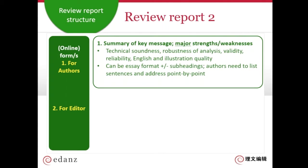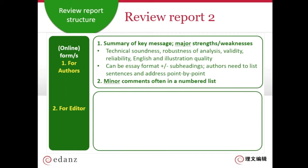Numbering is easier for the author to reply to, but if you do write an essay you could use subheadings for the strengths and weaknesses so the author understands more quickly — though the author will then have to take each sentence apart and address each point. The other section in this part is minor comments, where you list things in a numbered list. This is sometimes called point-by-point, where the author addresses each point and gives an answer to each question.